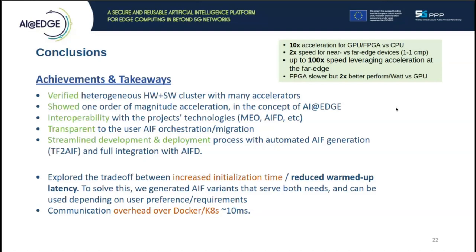For takeaways, we explored the tradeoff between increased initialization time of hardware-accelerated AIFs and reduced warm-up execution time. We developed several variants to cover both optimization goals, which allows us to deploy each time the one that better suits the user's needs. Finally, we observed that Kubernetes network virtualization and containerization induce overhead that, while negligible for cloud, could be critical for latency-sensitive edge applications.